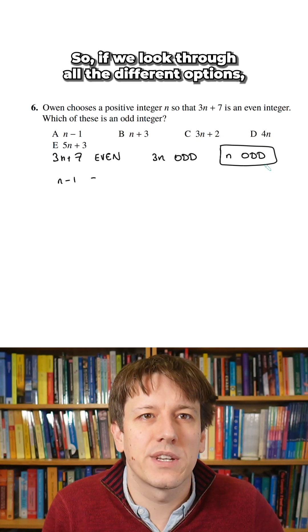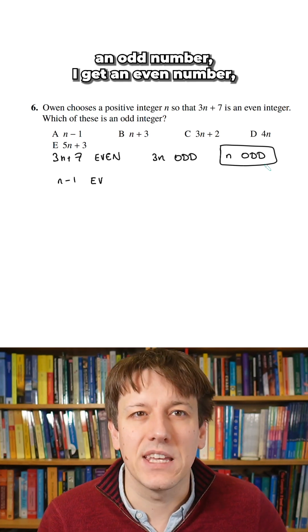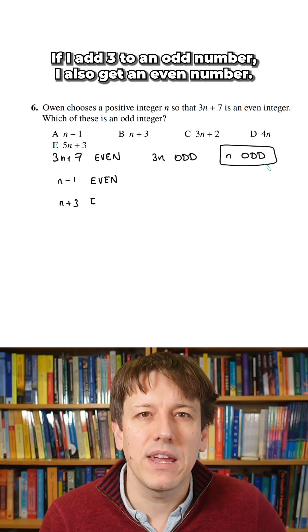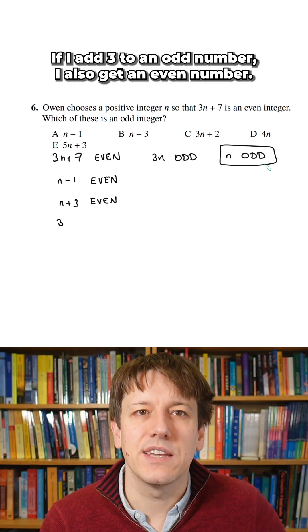So if we look through all the different options, if I subtract 1 from an odd number, I get an even number. Odd minus odd is even. If I add 3 to an odd number, I also get an even number.